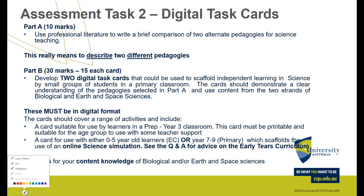In Part B we've got two digital cards. One of these digital cards relates to one year level group and the second relates to a younger year group, so one task is basically going to scaffold independent learning for two groups of students in a primary classroom. This is going to be built on the pedagogies you identify in Part A, and you're going to use content from two strands — biological, and earth and space sciences. You must do one card on either or, and one must be suitable for a prep to three classroom.